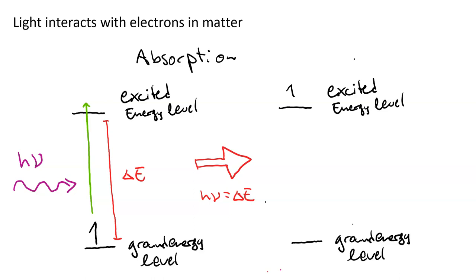So when the electron is in its lowest energy level, we call that the ground state, or GS. And when the electron is in an excited energy level, we call that an excited state, or ES.